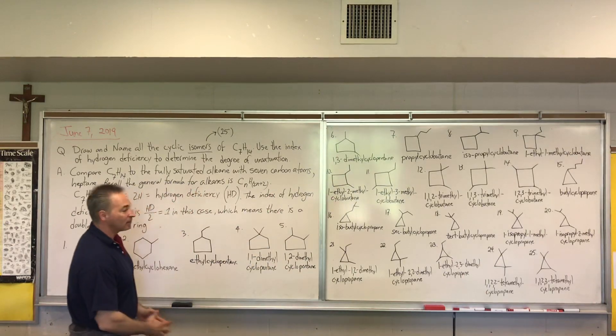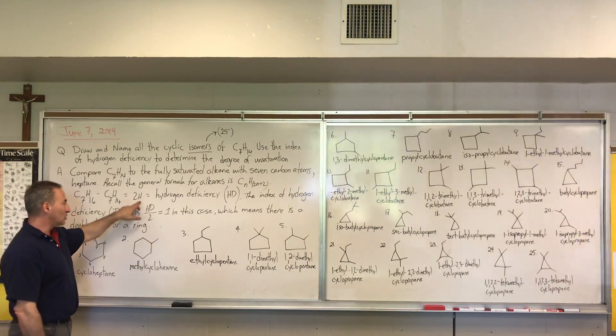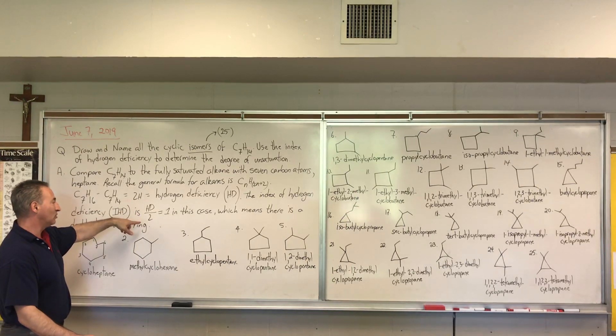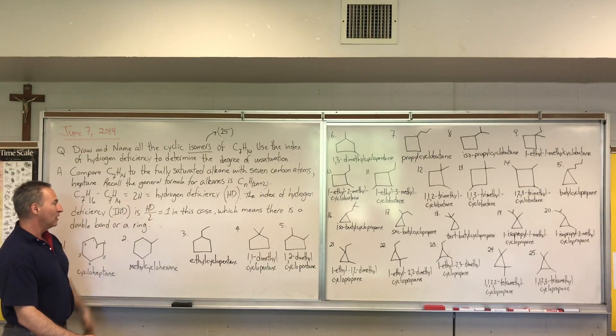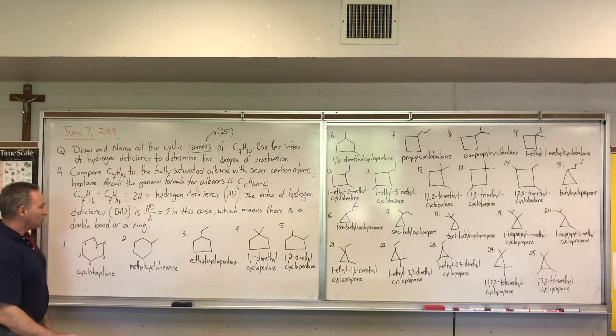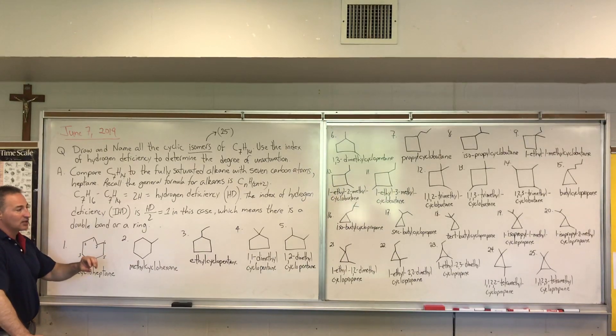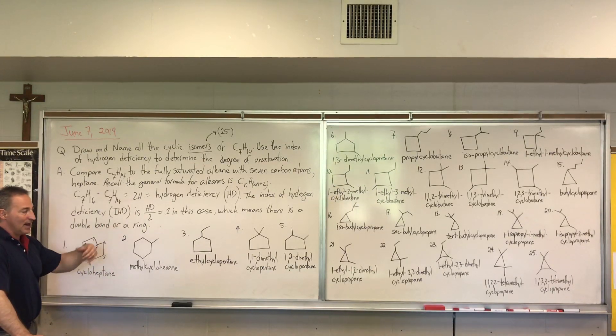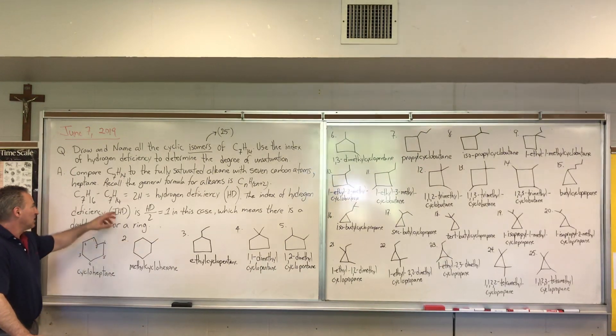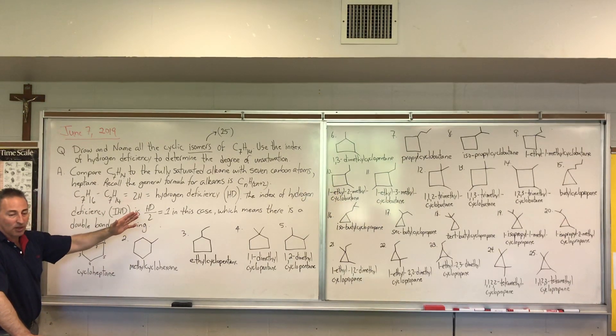But in this question I only ask for the ring isomers of C7H14. So the hydrogen deficiency is 2, you're missing two hydrogen atoms. And the index of hydrogen deficiency is HD divided by 2, in which case that's 1. So that means there is either one double bond or one ring. So to do this logically, we're going to exhaust all the possibilities by starting from the biggest ring and then reducing to the smallest ring and then adding on the extra carbon as the result. All 25 of these molecules have exactly the same formula, C7H14.